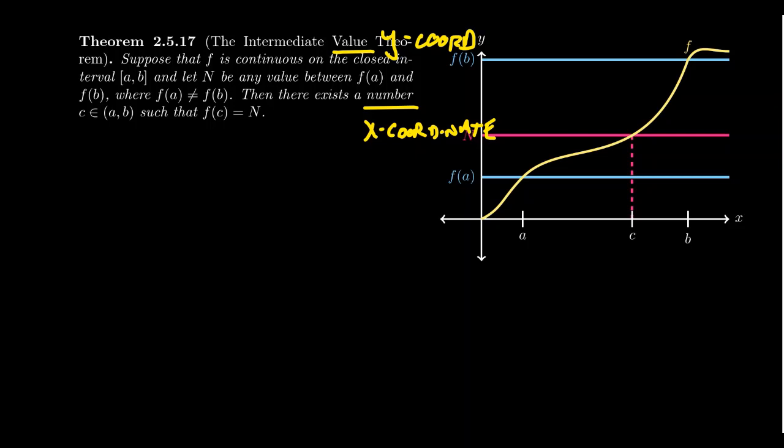And if I ever talk about a point, a point will always reference an ordered pair. We have an x-coordinate and a y-coordinate together. So when we have the Intermediate Value Theorem, I want you to think about the intermediate y-coordinate theorem. That's another way of thinking about it.